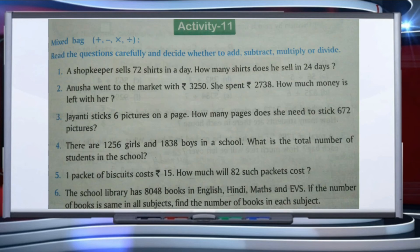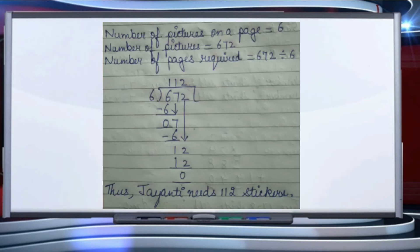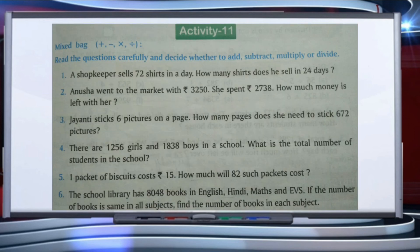The third question: Jayanti sticks 6 pictures on a page. How many pages does she need to stick 672 pictures? Number of pictures per page is 6, total pictures is 672, so pages required equals 672 divided by 6. Dividing: 6÷6=1, remainder 0; bring down 7, 6÷6=1, remainder 1; bring down 2, 12÷6=2. Jayanti needs 112 pages.